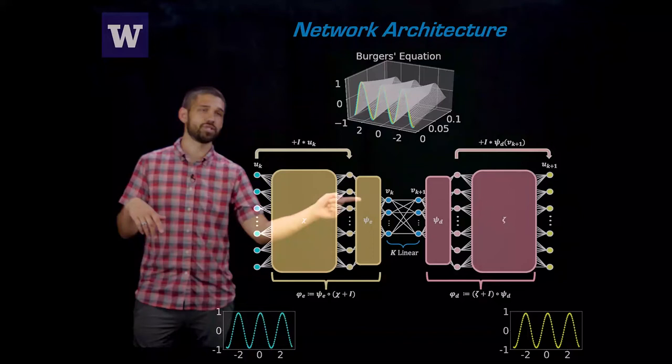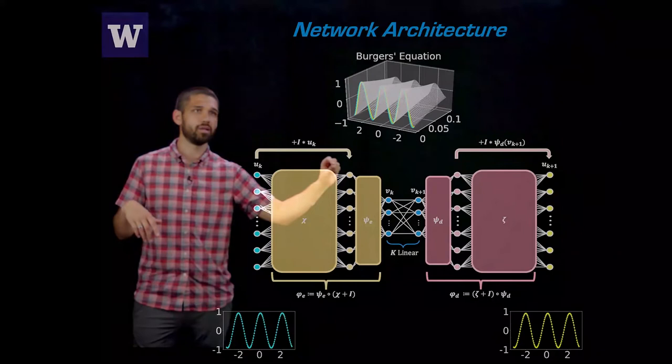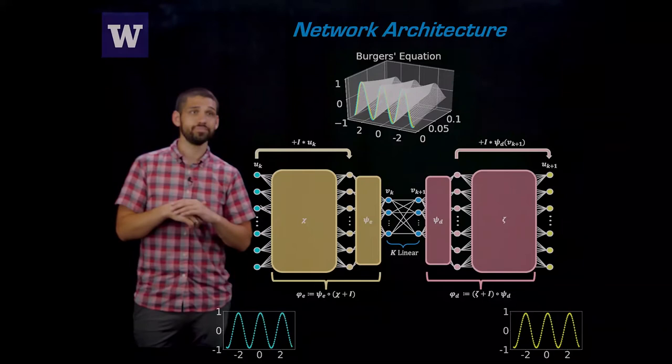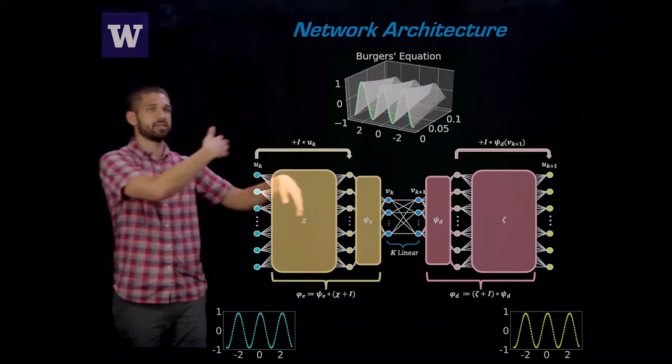And then what's the inner encoder doing if the outer encoder is doing the linearizing transformation? The inner encoder is actually just a linear layer and it can do dimensionality reduction. So if you want to have a reduced order model, you can squeeze down to a lower dimension than your inputs. And also, you could choose for your dynamics matrix to be a diagonal matrix. And in that case, this is going to do diagonalization for you.